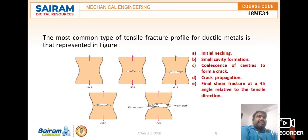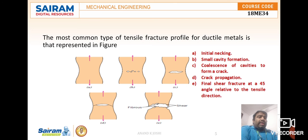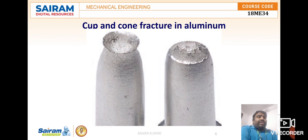Finally, fracture occurs. The final shearing of the specimen produces a cup and cone structure on the fracture surfaces. The fibrous and shear regions can be identified here. As shown in the figure, this is an actual cup and cone shape of fracture for aluminium, which is one of the best examples of a ductile material fracture.